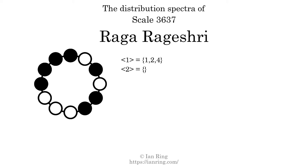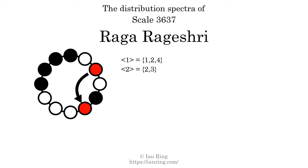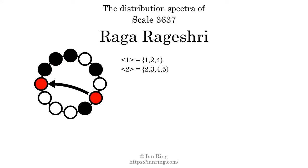The generic interval of two scale steps comes in four different specific interval sizes: two semitones, three semitones, four semitones, and five semitones. The spectrum width of this generic interval is three.